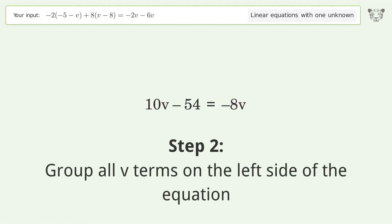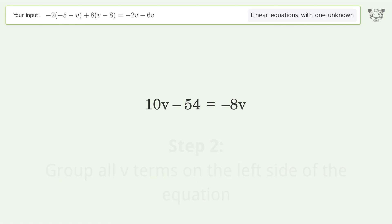Group all v terms on the left side of the equation. Add 8v to both sides. Group like terms. Simplify the arithmetic.